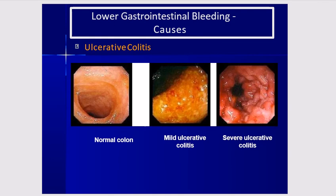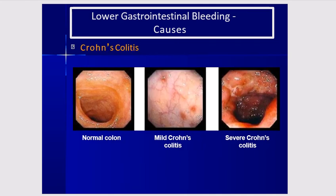Ulcerative colitis: on the left is a normal colon with a normal haustral pattern, in the middle is mild ulcerative colitis, and on the extreme right is severe ulcerative colitis. Crohn's disease is somewhat different from ulcerative colitis; the endoscopic picture is distinct and confirmation is made by biopsy.